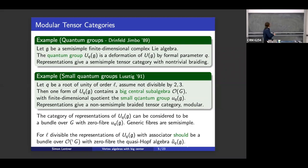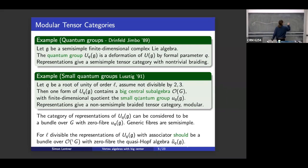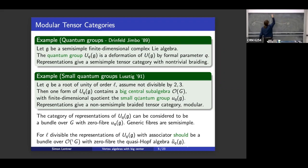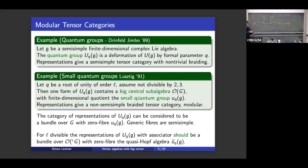The picture we should have in mind is: you have this big place — the Lie group G — and if you have this big central sub-algebra, the category fibers over this group G. At the identity, there are all representations on which the center acts trivially. Inside there are basically representations of the small quantum group. But then there are also other fibers, and this whole category sort of fibers over this variety.